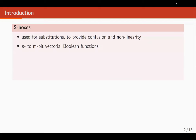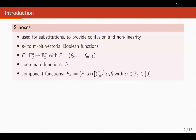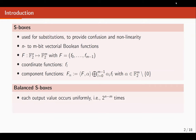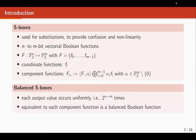S-boxes are one of the main components in designing block ciphers and also in many other symmetric cryptoprimitives. They are n-bit to n-bit vectorial boolean functions. By coordinate functions, I mean each output function of a function, and by component functions, I mean any linear combination of these output functions. We are usually interested in balanced S-boxes, where each output value appears uniformly, and it is equivalent to each component function being a balanced boolean function.